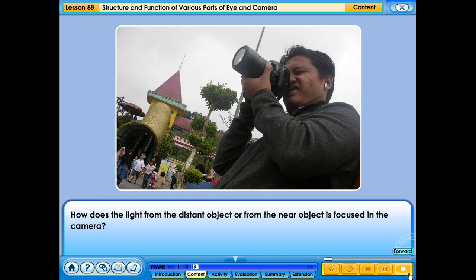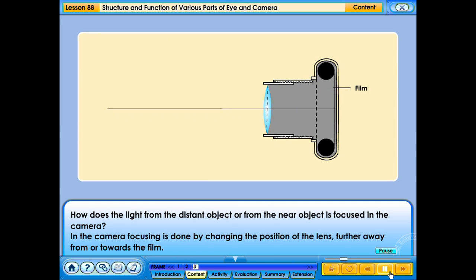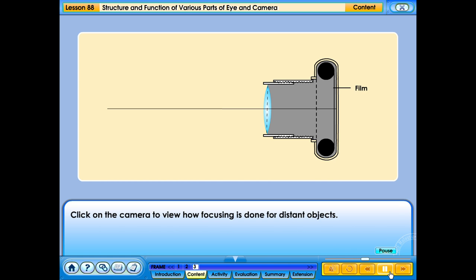How does the light from the distant object or from the near object is focused in the camera? In the camera, focusing is done by changing the position of the lens further away from or towards the film. Click on the camera to view how focusing is done for distant objects.